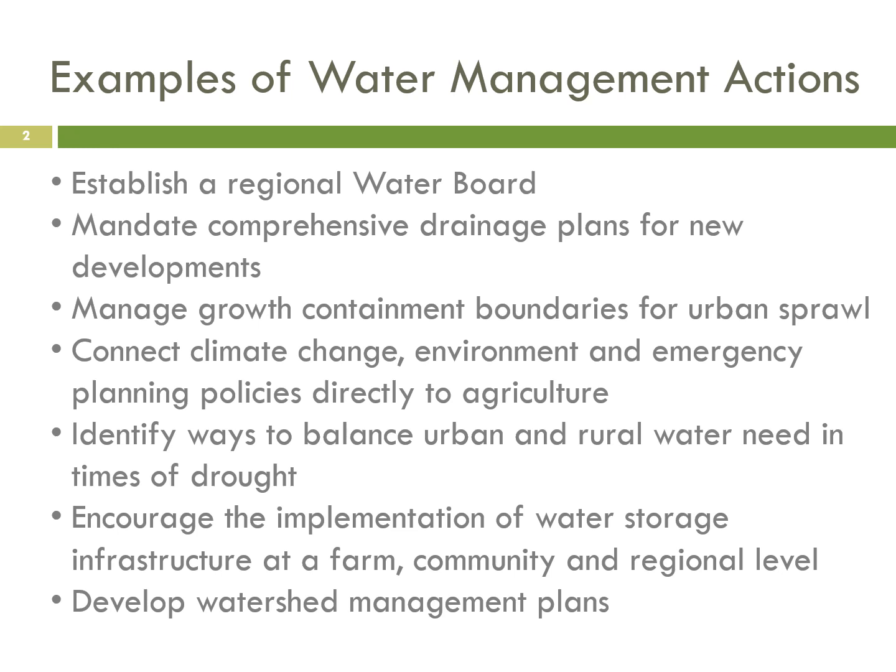Another action is to mandate comprehensive drainage plans for new developments. This is important because new developments outside of the agricultural land reserve often occur on hillslopes, so water flow from these developments can impact farmland which is often downstream or below. Drainage can be extremely important. It's also important to manage growth containment boundaries for urban sprawl to ensure that less land is paved over, which also has implications for drainage, and to ensure that extremely efficient water conservation devices are included in any new urban developments.